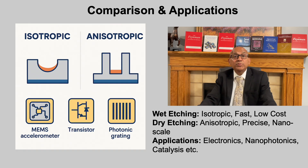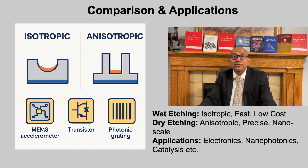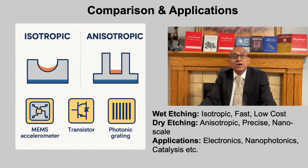To highlight the comparison: wet etching is a chemical process that removes material isotropically, equally in all directions. It is simple, fast and inexpensive, making it ideal for large area processing where extreme precision is not essential. Dry etching, particularly reactive ion etching RIE, relies on energetic ions and reactive species to achieve anisotropic profiles with vertical side walls. This directional control allows for the definition of extremely fine patterns at the nanoscale. When combined with lithography, etching techniques enable the fabrication of MEMS components, semiconductor transistors, metal interconnects and nanostructured optical or catalytic surfaces. Together, these processes provide the precision required to sculpt materials at nanometer dimensions, forming the complex architectures that underpin today's advanced technologies.